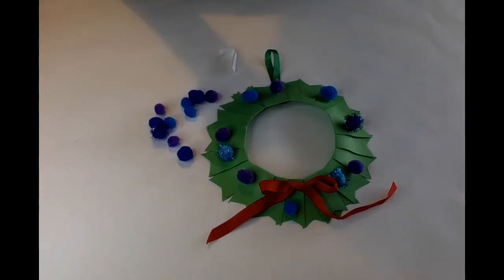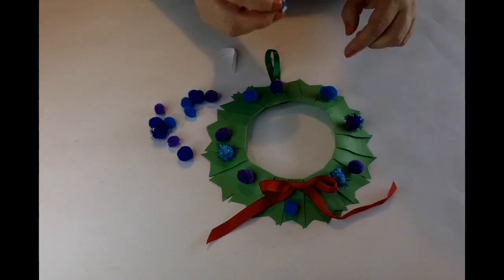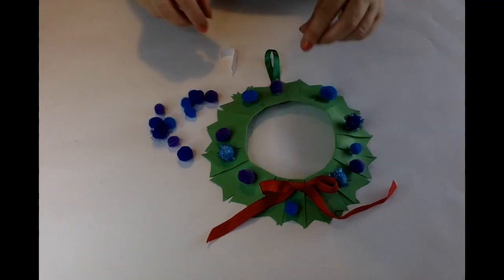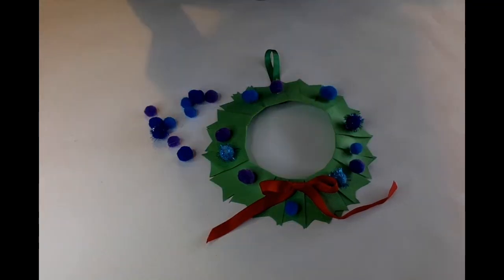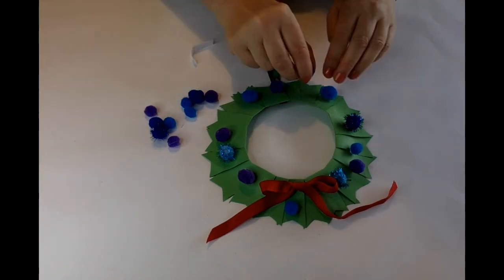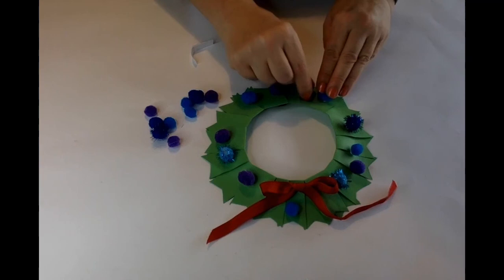If you find the glue dots a bit fiddly, and you've got white school glue and a spreader, you could always stick them on with that. But you will have to put them on a flat surface and let them dry completely before you try and hang your wreath.